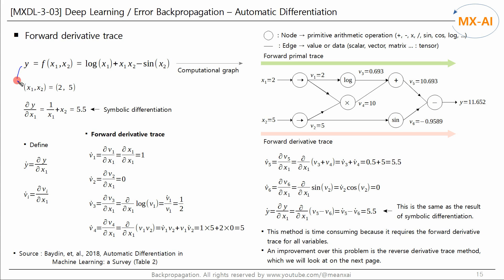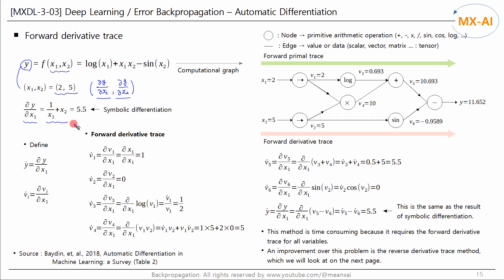Let's take a simple example. We have a function y with two variables. We want to find the partial derivative of the function y with respect to the variables x1 and x2. Using symbolic differentiation, the partial derivative of y with respect to x1 gives us 5.5 — the slope of y with respect to x1 at this point.